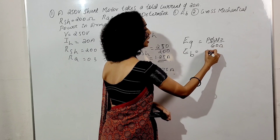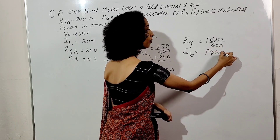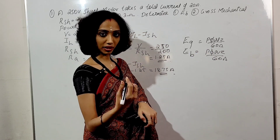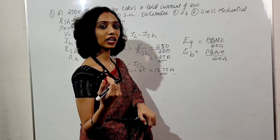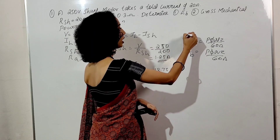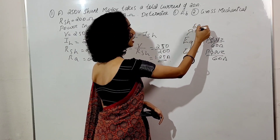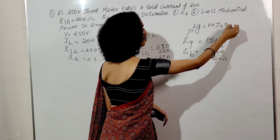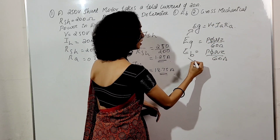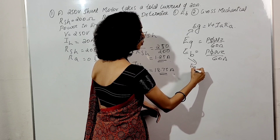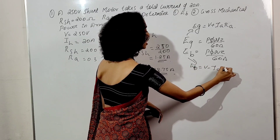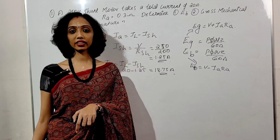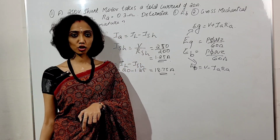These two equations — for DC motor and DC generator — are common. We can derive the equation: for a generator, EMF equals V plus IA*RA. So for a motor, the back EMF EB is equal to V minus IA*RA.